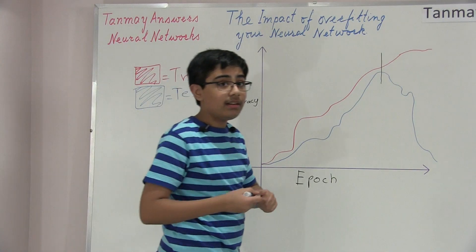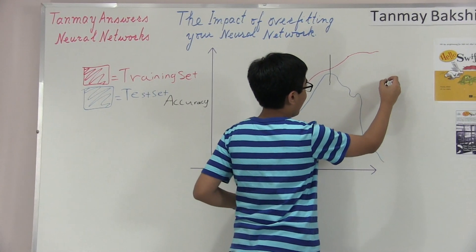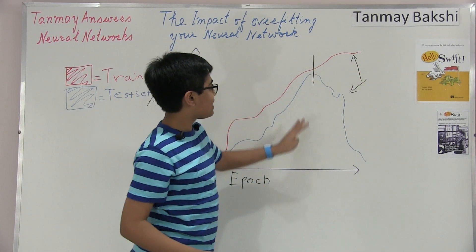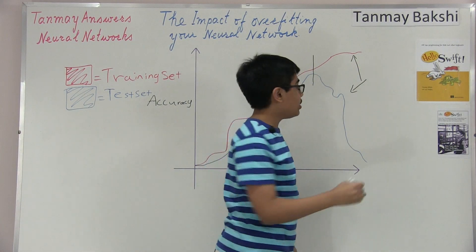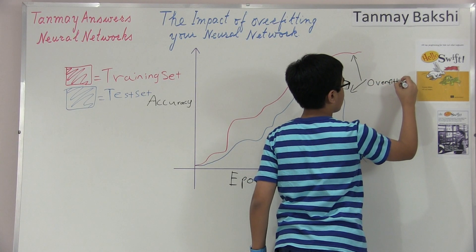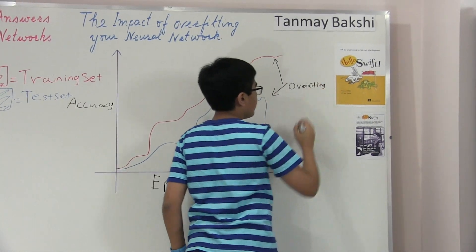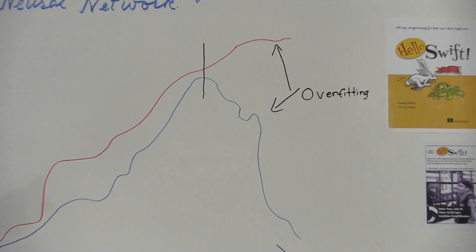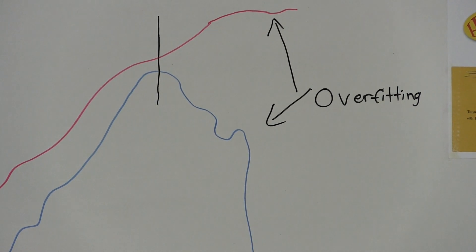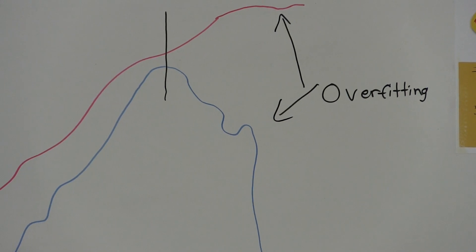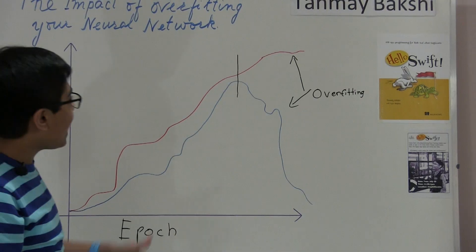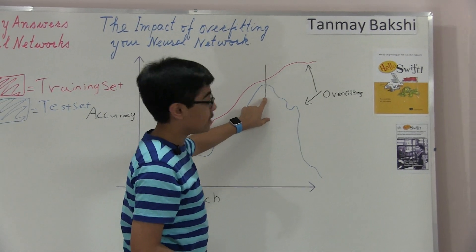After this point — this line here — we start to do something called overfitting. Overfitting basically means that we are fitting this neural network model too much to our training data to the point where it's memorizing the training data. There is absolutely no point for us to actually train our neural network past this point.